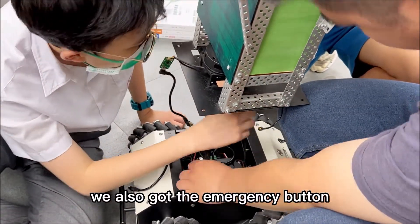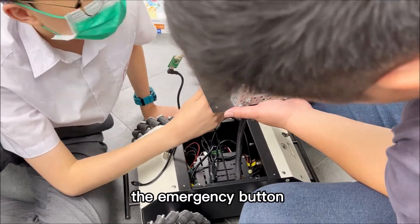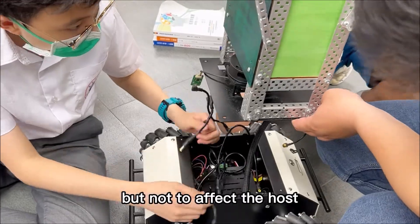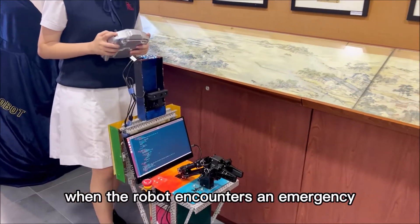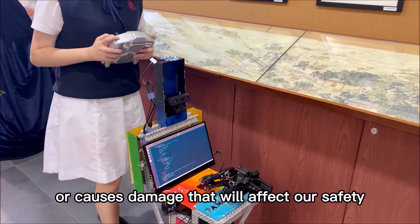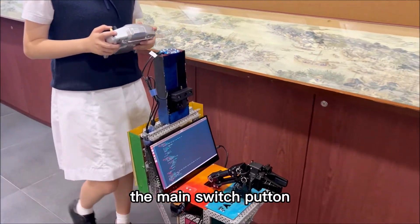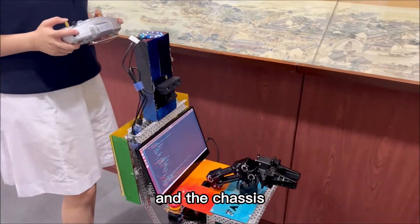We also have an emergency button. The emergency button can shut down the robot's chassis, but not affect the host. When the robot encounters an emergency or causes damage that will affect our safety, we press the main switch button to shut down the host and the chassis.